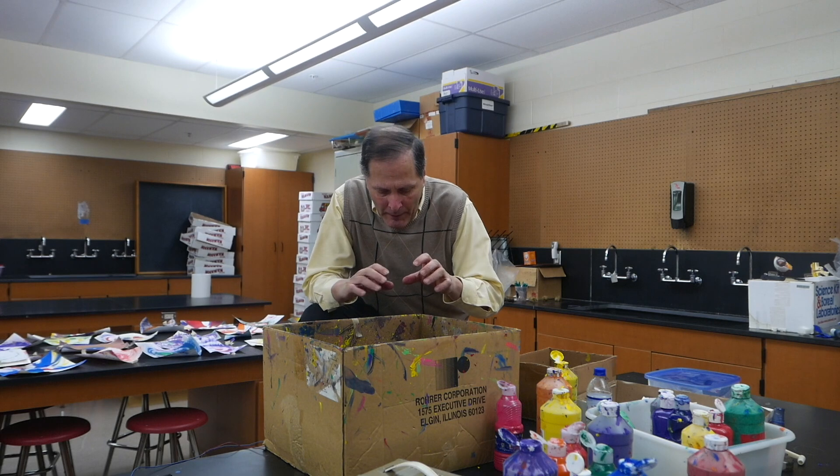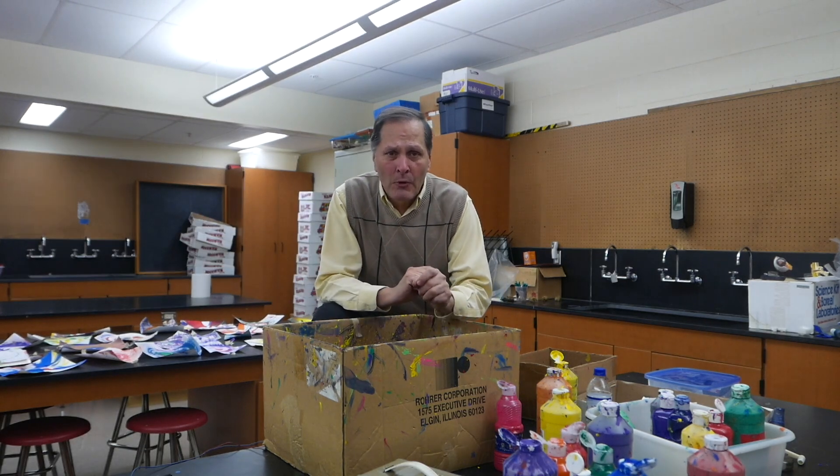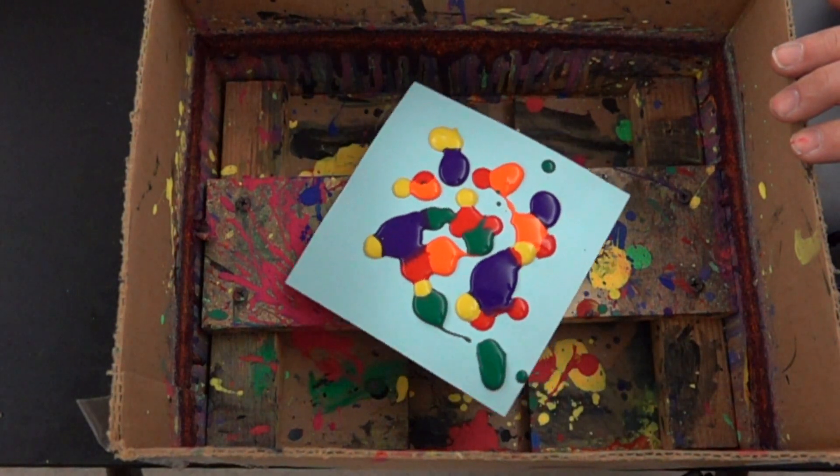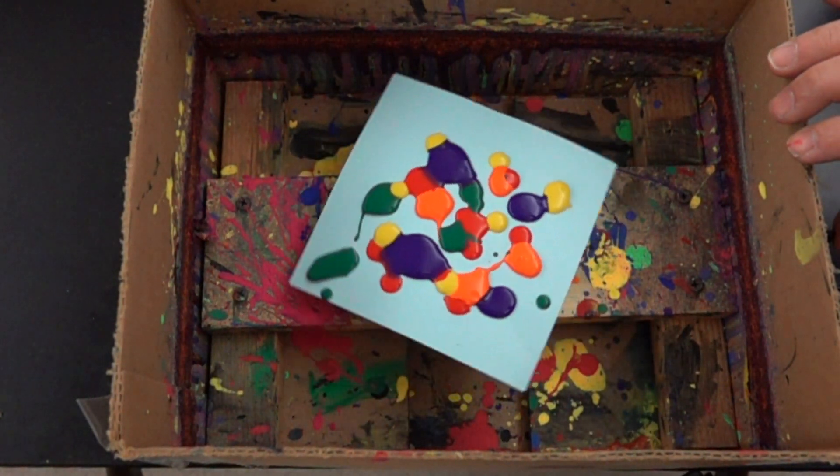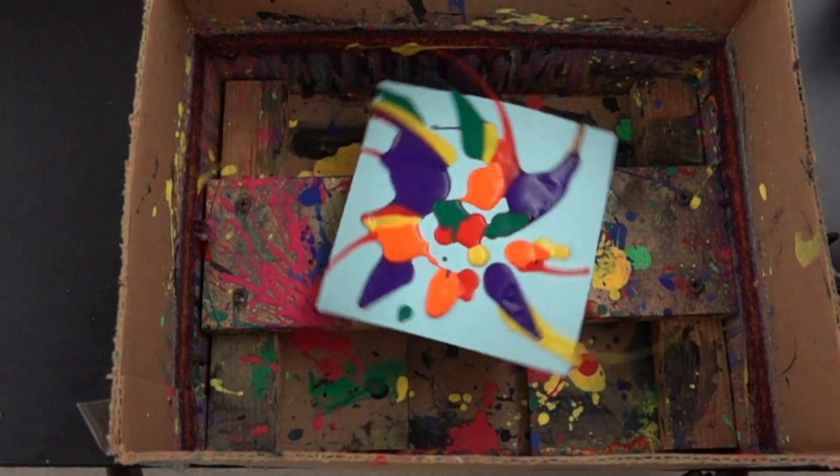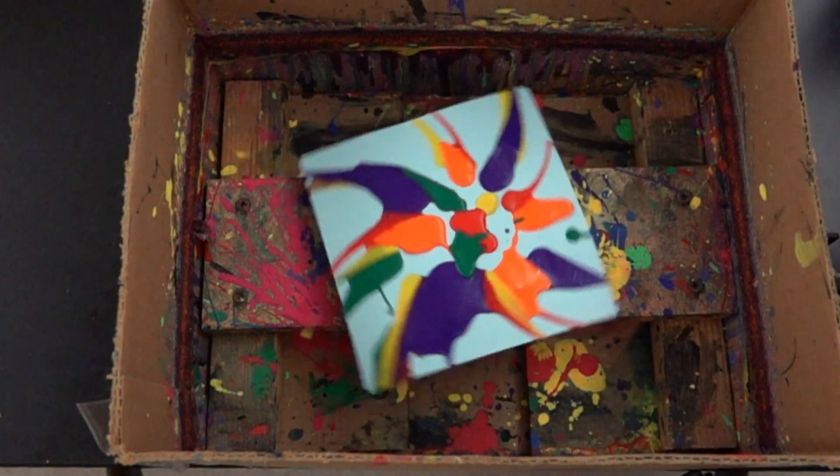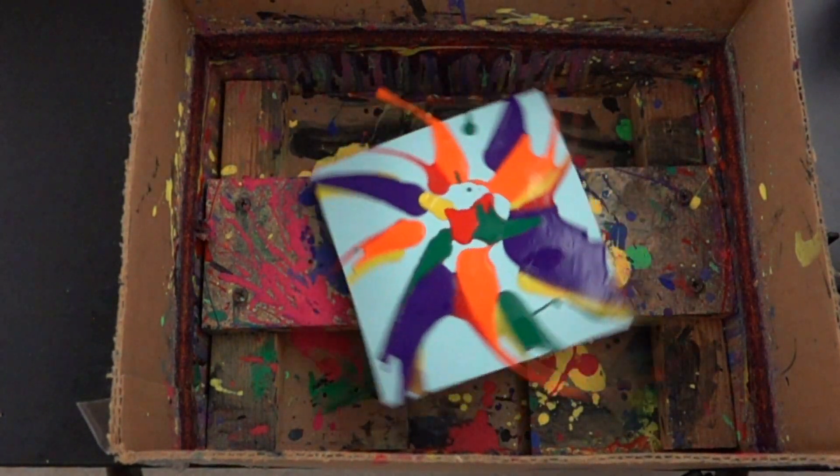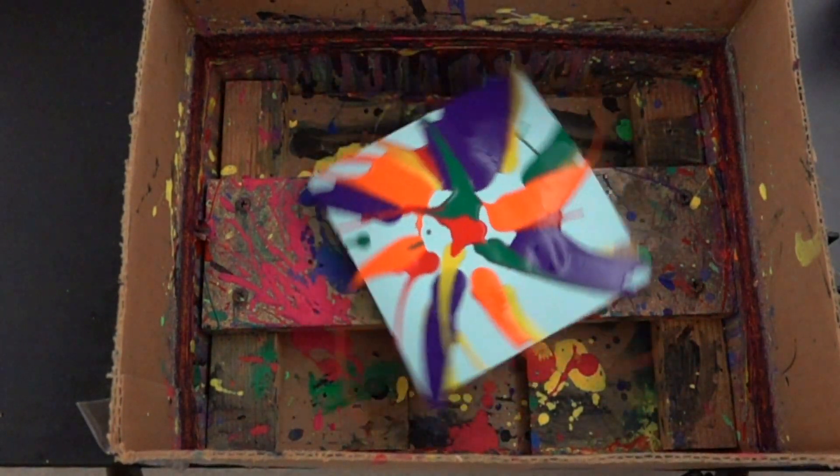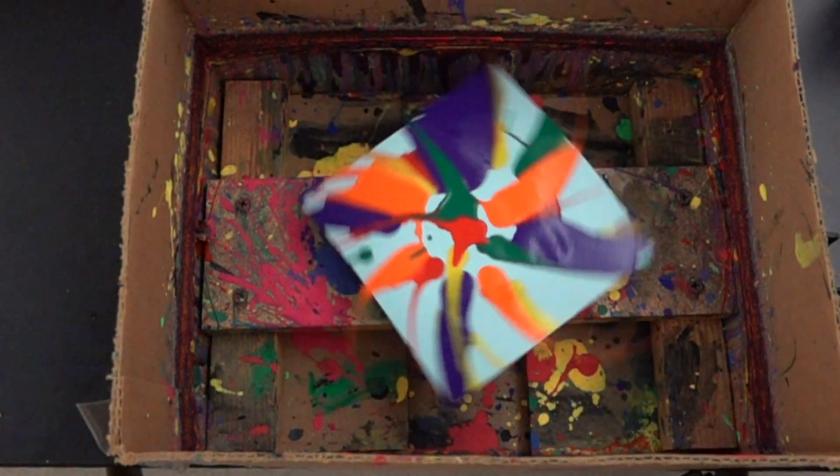Now I also think it's interesting to put paint on the paper before we start it and then watch what happens to it as it spins. As we watch in slow motion we can see the paint slowly work its way directly to the outside of the paper. Now there's quite a bit of adhesion between the paper and the paint itself. But once it breaks free of the paper we can see a spiral stream of paint going directly out and then hitting the edge of the box.